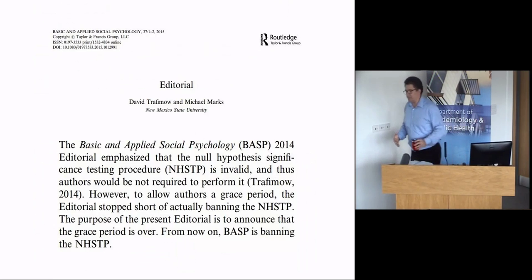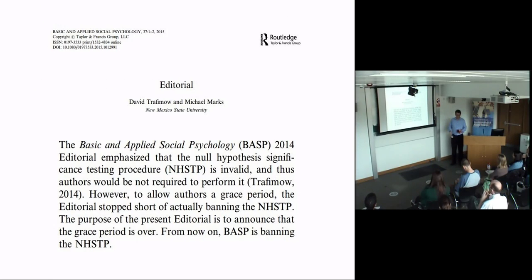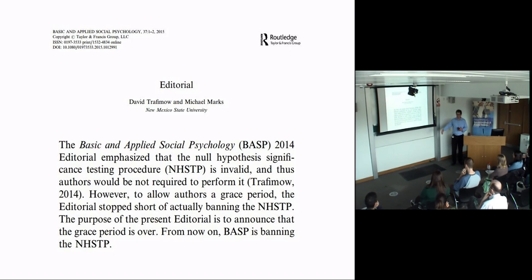Going back in time: the ASA statement — which is a rare thing for statisticians to do, to get together and make a statement — was partly spurred by an editorial in Basic and Applied Psychology where the editors essentially banned null hypothesis significance testing from their journal. No significance, no 0.05. They went further and banned standard errors and standard deviations, and ultimately stopped requiring any means of statistical inference in their papers.